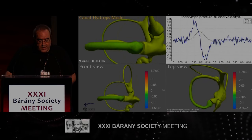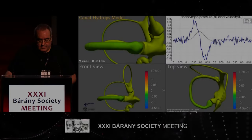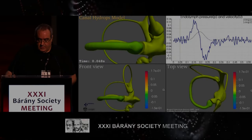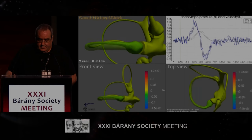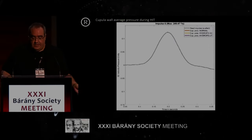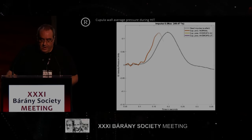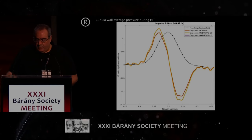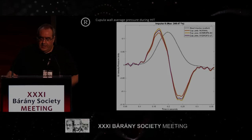Now we move to a hydrops model. The video is not working, so we will look at the plots instead. We have here the head velocity. This is the pressure obtained from the normal model. This is the pressure for the hydrops in semicircular canal model, and this is the endolymphatic pressure in the utricular model.